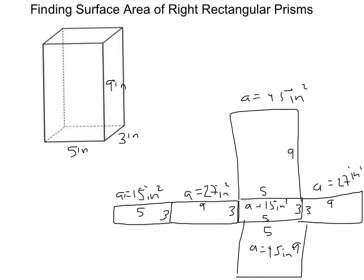When you have your net, you should always have three sets of identical rectangles. So notice that this set here, those two are identical. This one and this one are identical. This one and this one are identical. And again, I understand that my drawing is a little ugly here. So now that we have each one of our areas, we can go ahead and add those together.